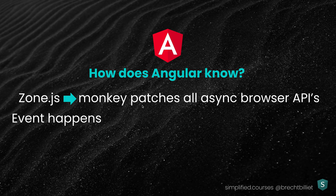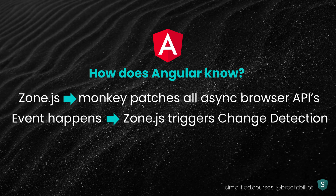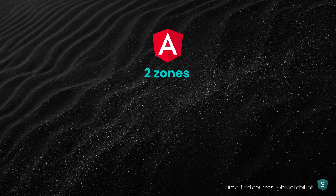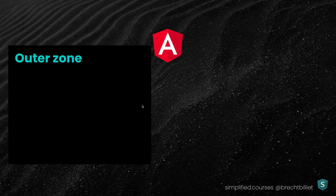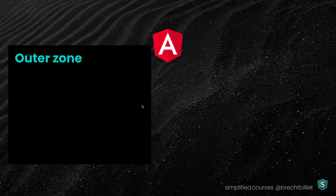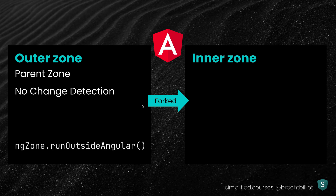Every time an event happens, Zone.js will trigger Change Detection. There are two zones, and there can only be one zone active at the same time. We have the outer zone, which will be forked into the inner zone. The outer zone is also called the parent zone, and it will never trigger Change Detection.